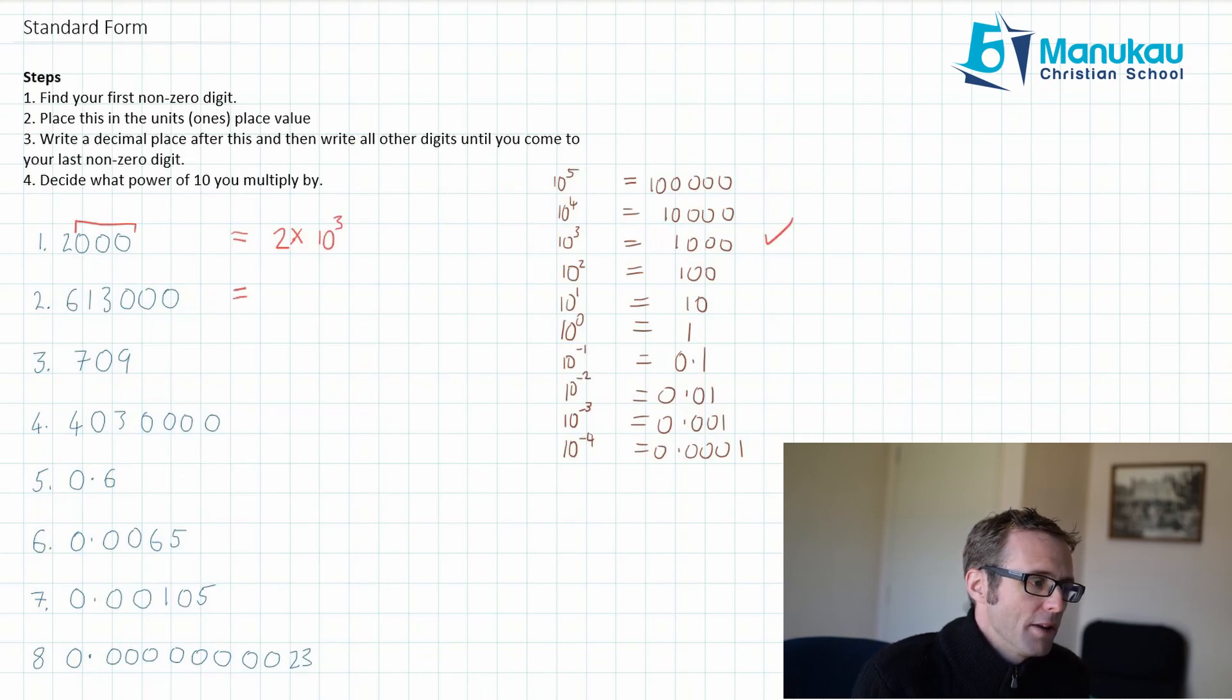Let's look at this next one. Find our first non-zero digit, 6. Put this in the ones place with a decimal after it. Now write all of the non-zero digits that are left: 1, 3, and then I'm going to times by. Now I have 613,000 so I'm dealing with 100,000 here. So I'm going to times by 10 to the power of 5. I do my quick check. How many digits have I got? 1, 2, 3, 4, 5. Correct, I'm fine.